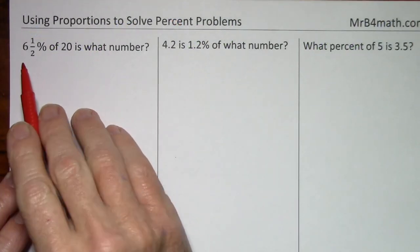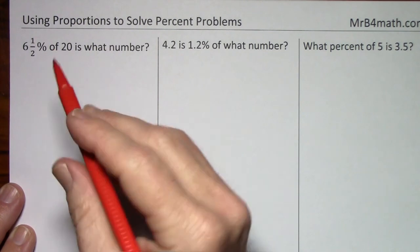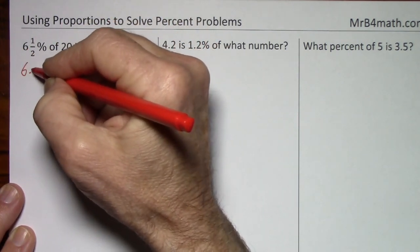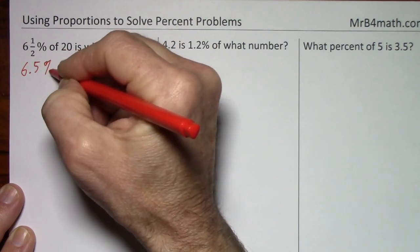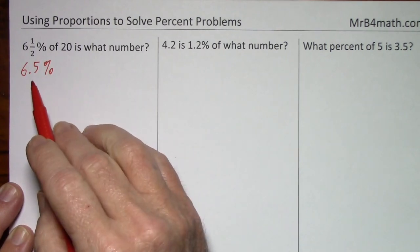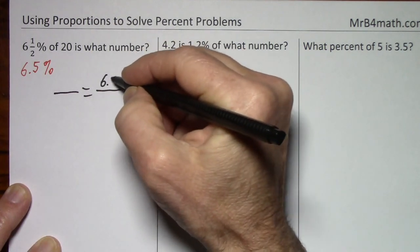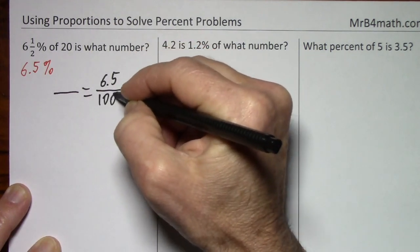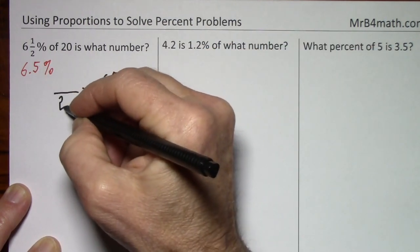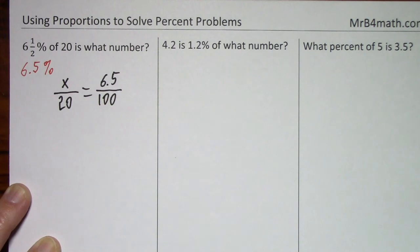Looking at this first one, we're given a mixed number percent. It's easy to work with decimals when you have percentages. So let's just change six and a half percent to 6.5%. And I'll still refer to this as six and a half percent. That's commonly understood. So six and a half percent, 6.5 over 100 of 20 puts our 20 in the denominator is what number. So that leaves us with a variable in the numerator.